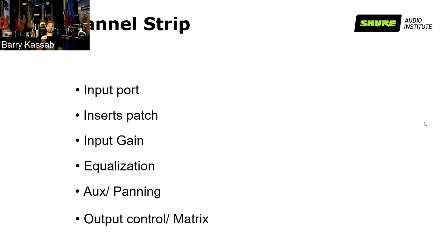If you don't disable your master and you engage groups — say your master, group one-two, and group three-four — adding those groups adds more power to the outputs. This helps you avoid crossing the gain level without adding more sensitivity. It's a trick many engineers use on analog mixers — and it can be done on digital as well.